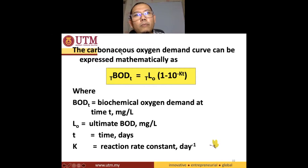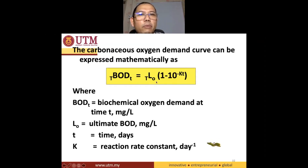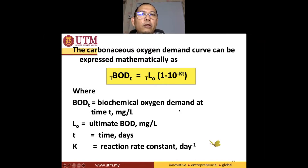We have already known how to measure BOD. T here is temperature, and this small t is this, and then how is it related to the ultimate BOD — it is related with times 1 minus 10 to the power minus KT. T also refers to this, and this K is actually the reaction rate constant, which needs to be found out from the experiment.